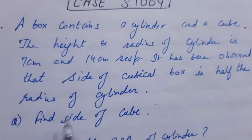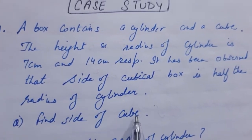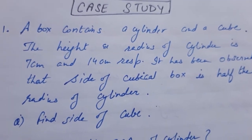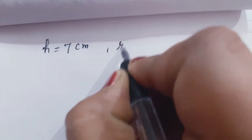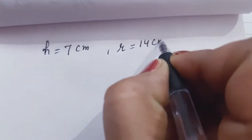The first part is to find the side of the cube. Let us solve it. The height of the cylinder is given as 7 centimeters and the radius is 14 centimeters.